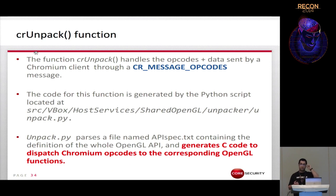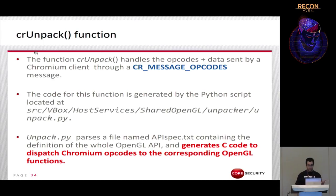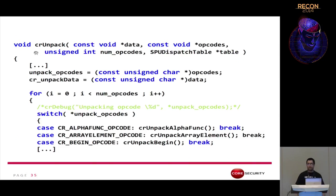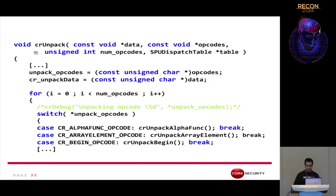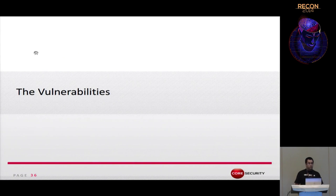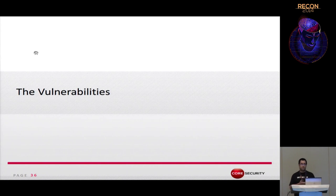When the Chromium server receives rendering commands or bytecode it calls a function called CR_unpack, which is a bytecode interpreter. It traverses the received opcodes and calls a handler function for each supported opcode — a really simple interpreter structure.